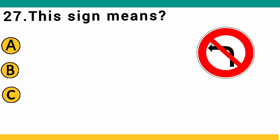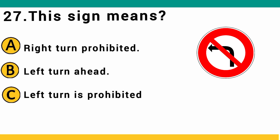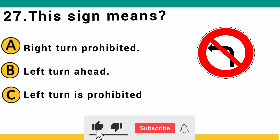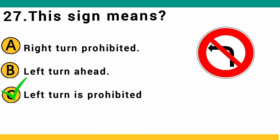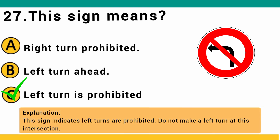This sign means: A) right turn prohibited, B) left turn ahead, or C) left turn is prohibited. The correct answer is C: left turn is prohibited. This sign indicates no left turn is permitted at this intersection.